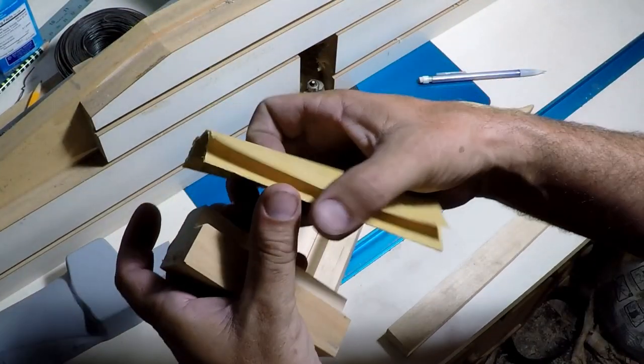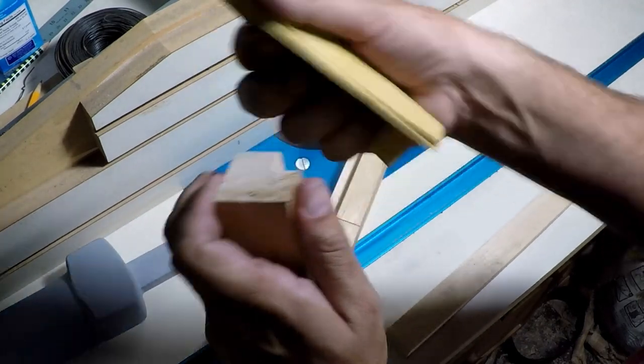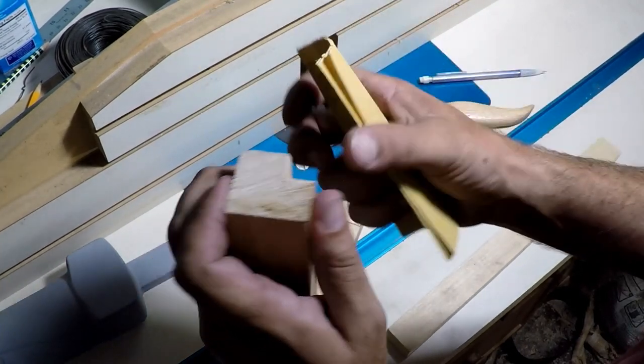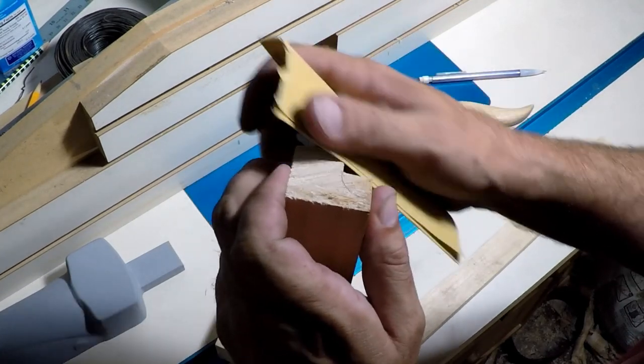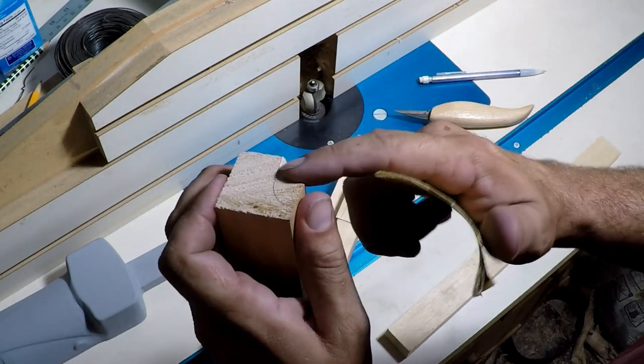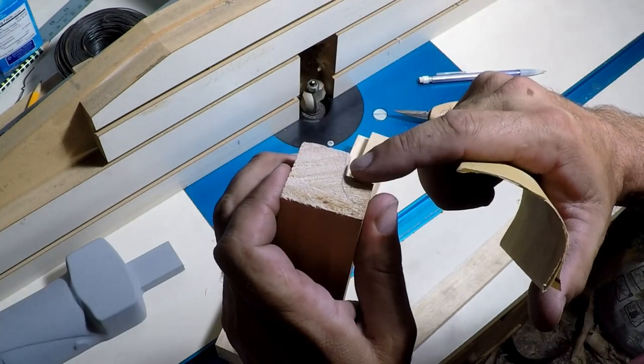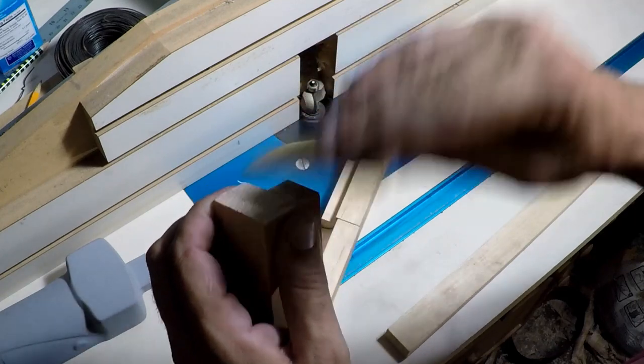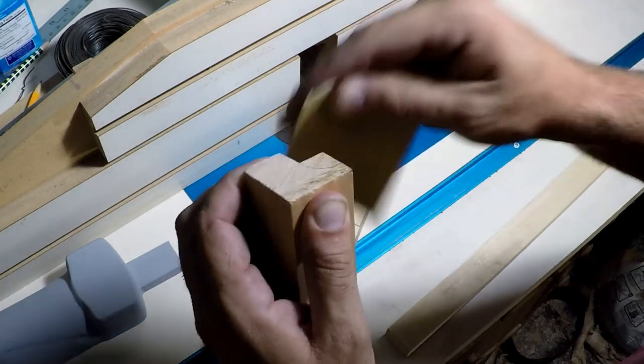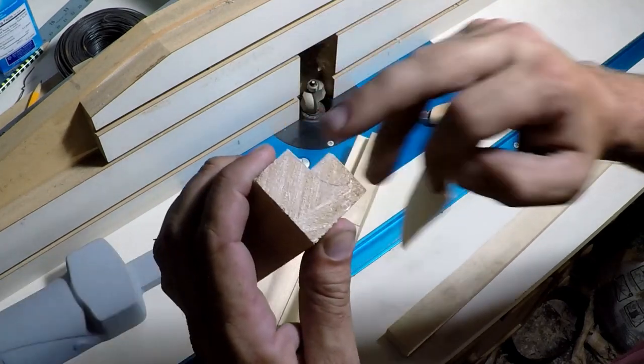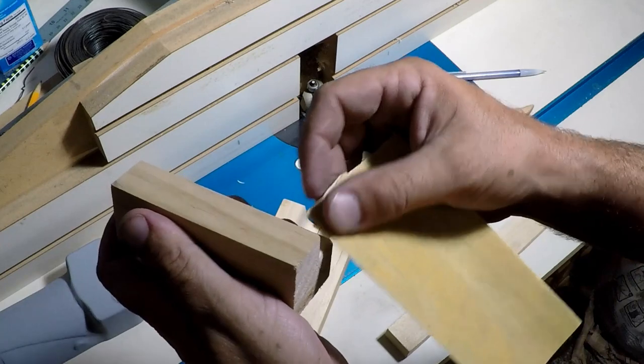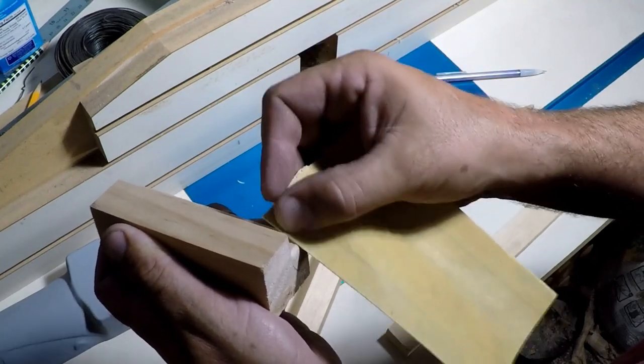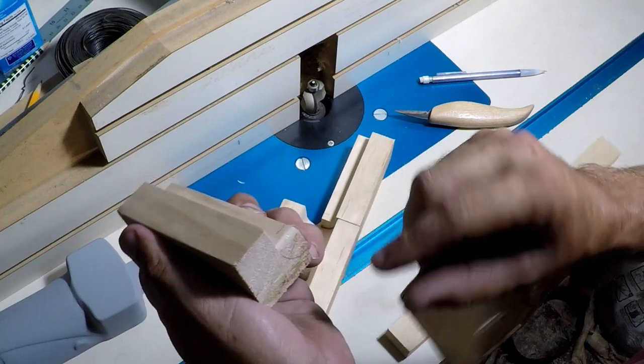So I just got some, I think this is 220 here. Just kind of smooth that up a little bit. Sharp corners are not your friends. All right, that's good. I can still even see my pencil line there. So that means I haven't taken away any more than what was necessary.